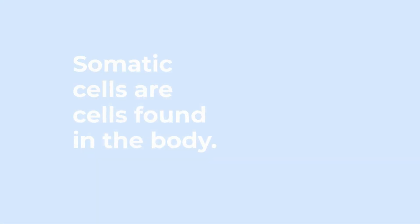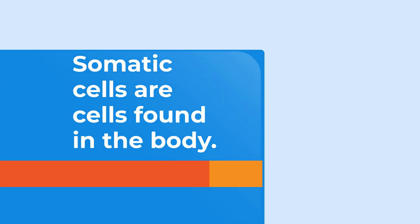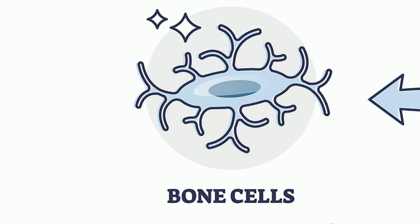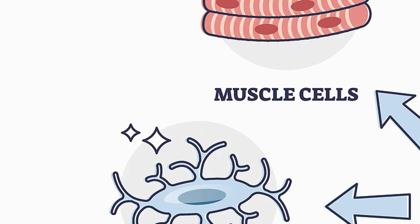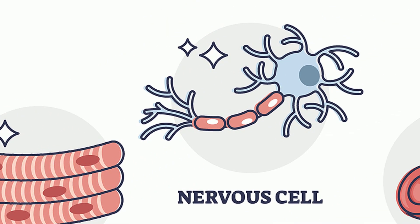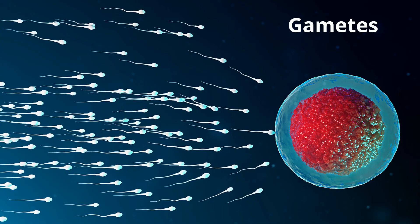Somatic cells are cells found in the body. In humans, examples would include bone cells, muscle cells, and nerve cells. Gametes, on the other hand, would include egg cells and sperm cells.